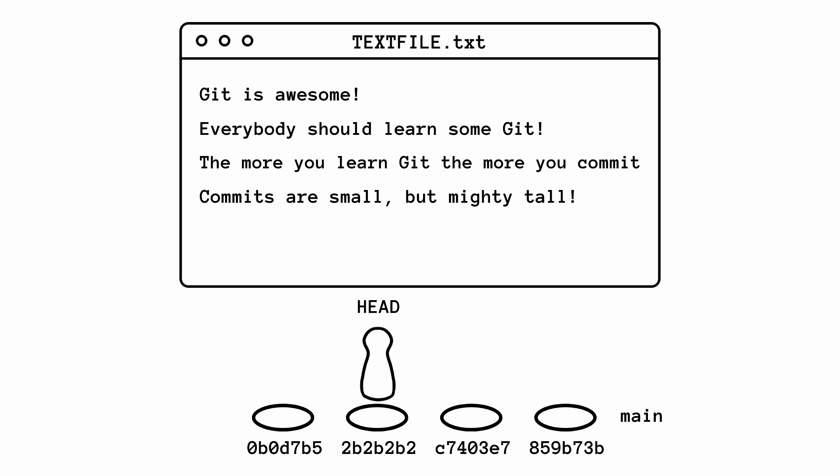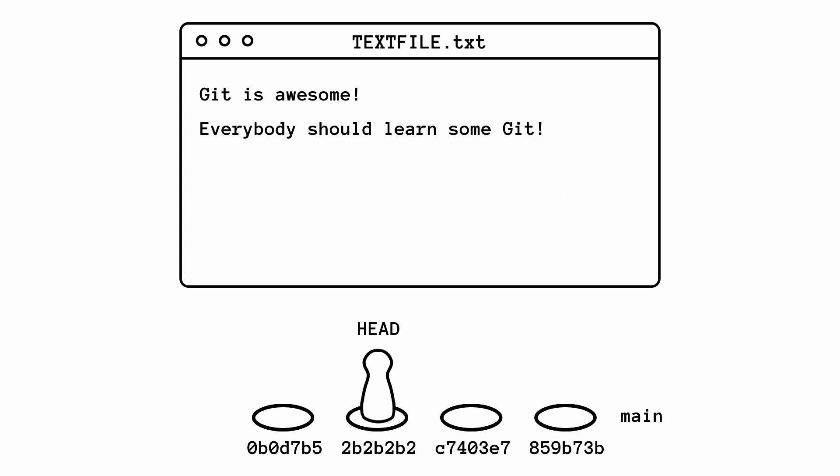Then you decide to switch to one of the previous commits. In a real project you might be searching for the commit where a bug was introduced. Let's say you found that commit and you decided to fix it immediately. For the sake of simplicity, as an example, I'll just add a bug fix to some line.